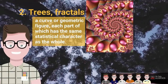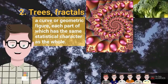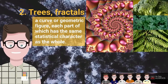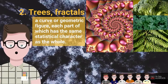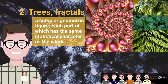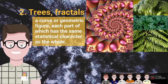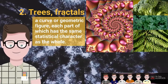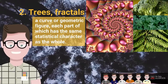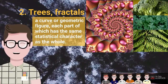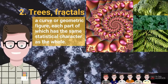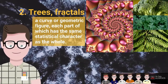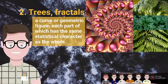Trees are natural fractals — patterns that replicate smaller and smaller copies of themselves in order to create the biodiversity of the forest. These objects display self-similar structure over an extended but finite scale range. For example, a branch of a tree from the trunk to the tips is a copy of the one that came before it. Other examples of fractal patterns in nature include broccoli, cloverleaf, and fern.